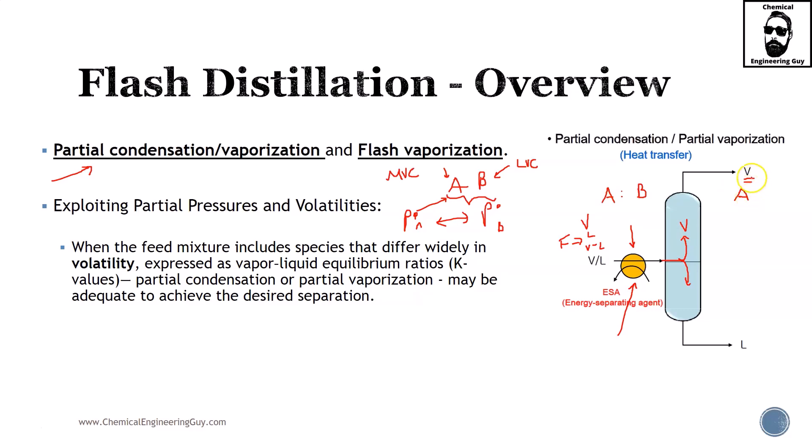The main idea is that component A will be richer in the vapor phase, and of course component B, the least volatile material, will be richer in the bottoms. Typically you will hear distillates and bottoms, or vapor and liquid streams, or product and subproducts lines. Overall, that's the idea: to separate and get richer A and richer B.